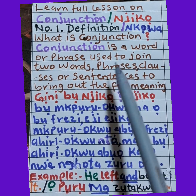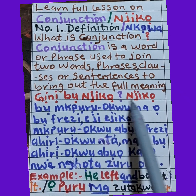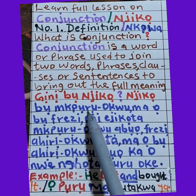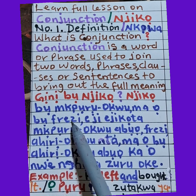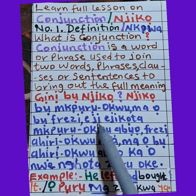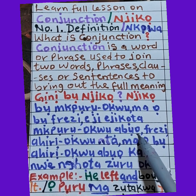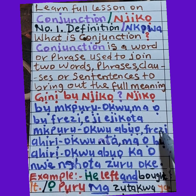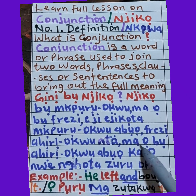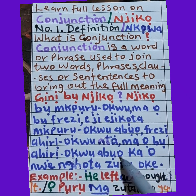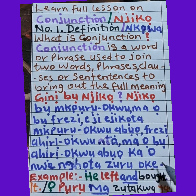Let's see it inibo. Ginebo njiko — njiko abo nkuroku ma obo. Phrase eji ejikota nkuroku abo. Phrase ahiroku nta ma obo. Ahiroku abo ka o nwe nkuroku abo.